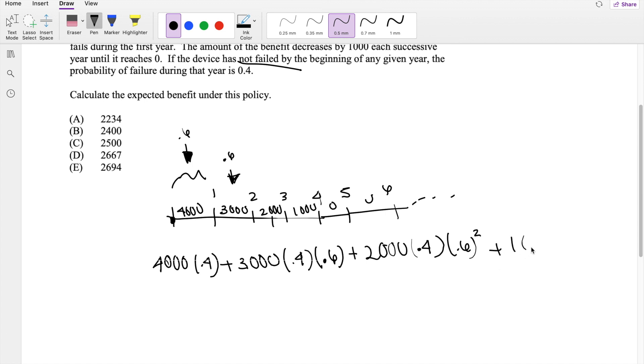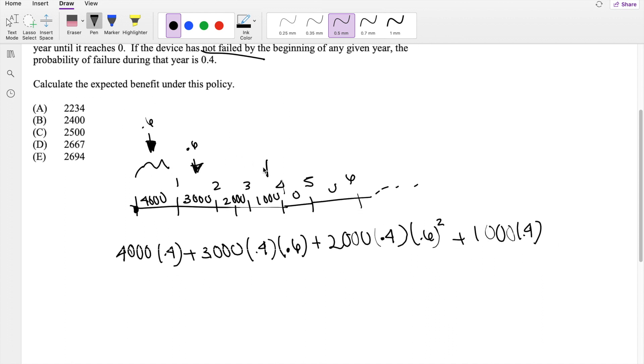And it's going to be $1,000. That's the last one. $1,000 times 0.4. Assume that it failed on that year. Given that it has not failed here, here, or here. So that's 0.6 to the cube.